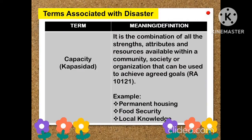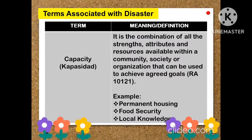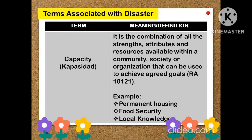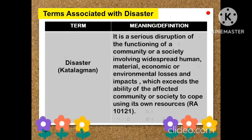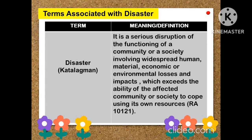These are the terms associated with disasters. Capacity is the combination of all the strengths, attributes, and resources available within a community, society, or organization that can be used to achieve agreed goals, from Republic Act 10121. Examples include permanent housing, food security, and local knowledge.